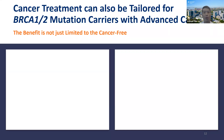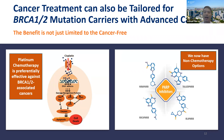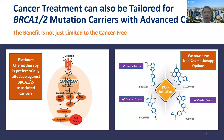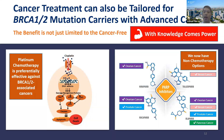For those who develop cancer, we can also tailor treatment according to their mutation status, so the benefit extends to both cancer-free and cancer patients. Chemotherapy choices can be adjusted — we can choose platinum chemotherapy, which is preferentially effective against these cancers. We now also have personalized medicines that are non-chemotherapeutic, available in tablet form, and may not cause hair loss. There are four FDA-approved drugs in the market for ovarian, breast, prostate, and pancreatic cancer. With knowledge comes power, but this power comes only when you have genetic knowledge.